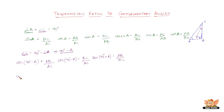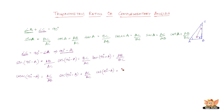Cosecant of (90 degrees minus A) is the inverse of sine, so that's AC over AB. Secant of (90 degrees minus A) is AC over BC. And cot of (90 degrees minus A) equals BC over AB.